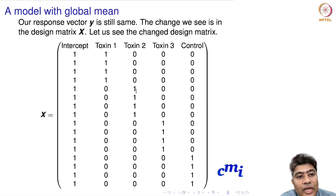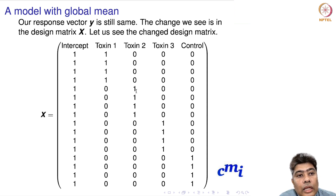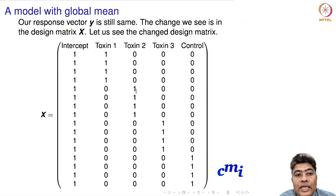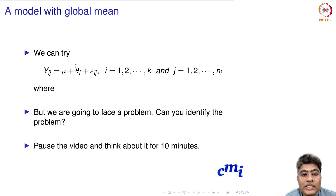Now you should have an idea of what problem we are going to face. The response vector will remain the same — the change we will see is only in the design matrix. The design matrix is what is going to change when we add the global mean parameter.